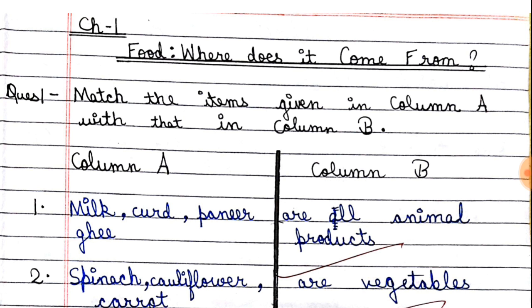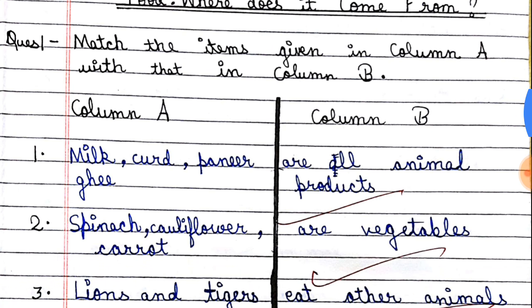The first question is: match the items given in Column A with Column B. This will be given in your book. I have listed Column A and Column B.